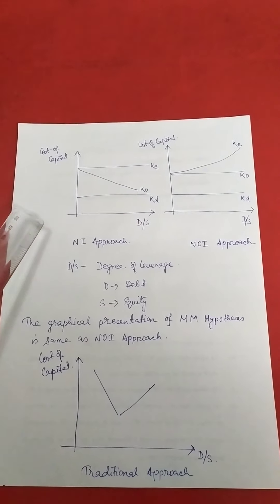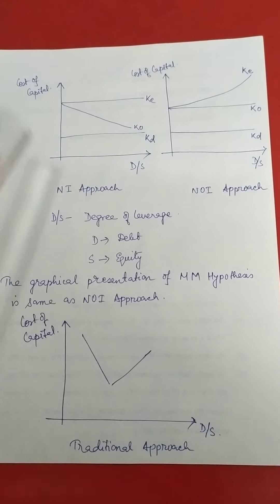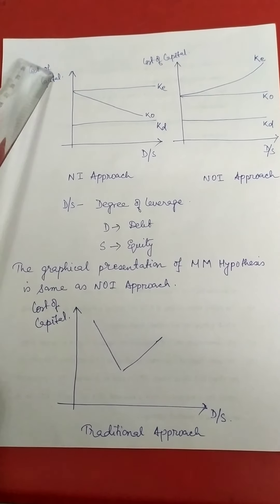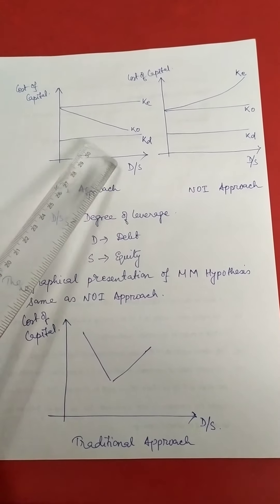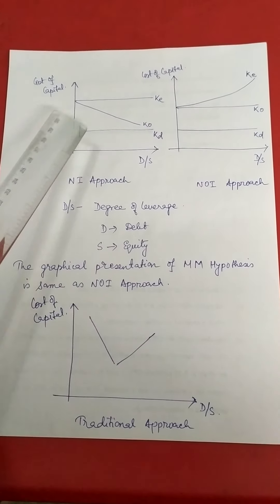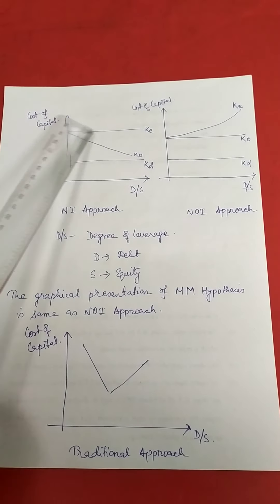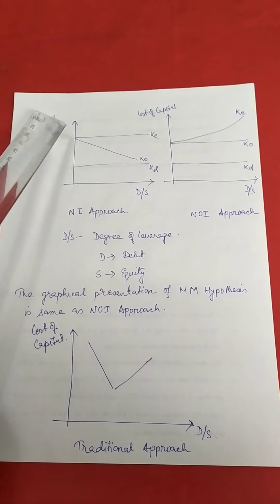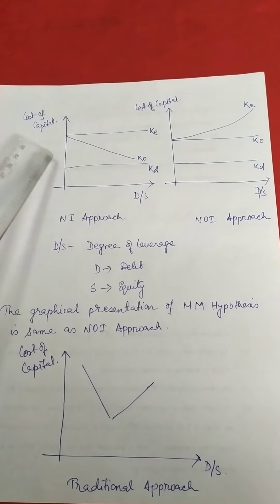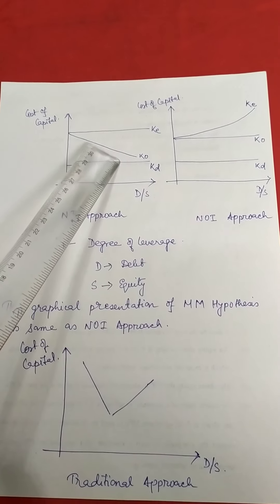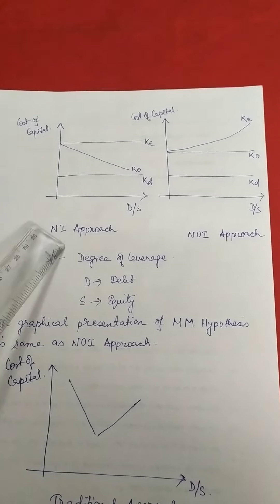Now, the graphical representation under the NI approach. In the NI approach, the y-axis shows the cost of capital and the x-axis shows the degree of leverage, that is debt by equity. The cost of debt is fixed and constant. The cost of equity is also taken as constant. As we increase the quantum of debt in the capital structure, the overall cost of capital KO starts decreasing.